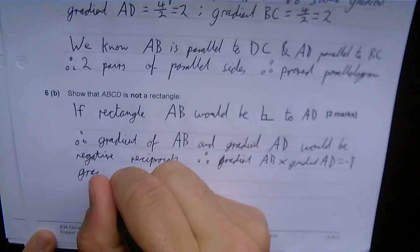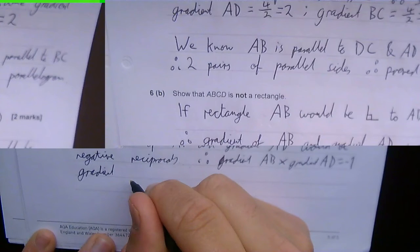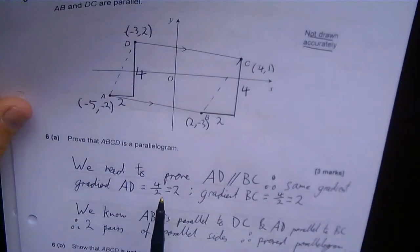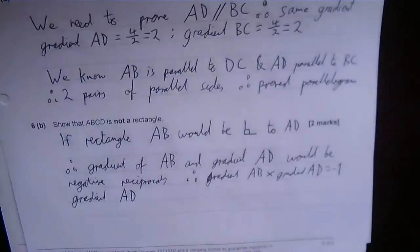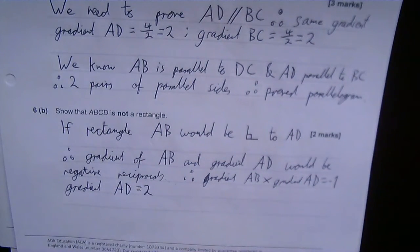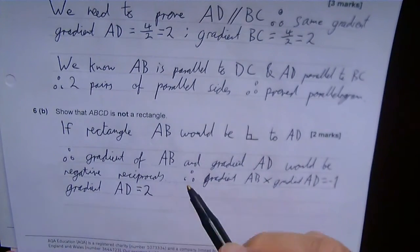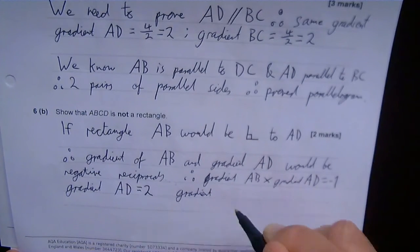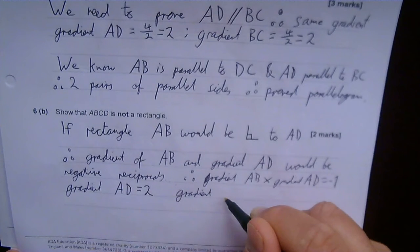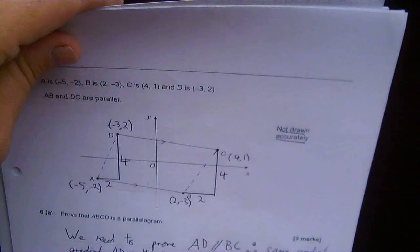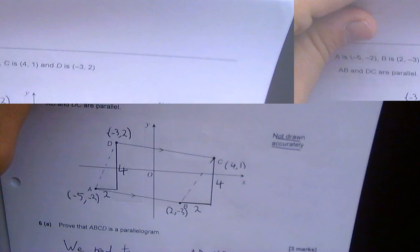So let's work out the gradients. Gradient AD, we know that already. We've already worked that out. We've worked that out here as 2. Let's have a look at gradient AB. We've not worked out the gradient of AB. Let's work it out now. So I'm going to go over here and put in my right angle triangle.